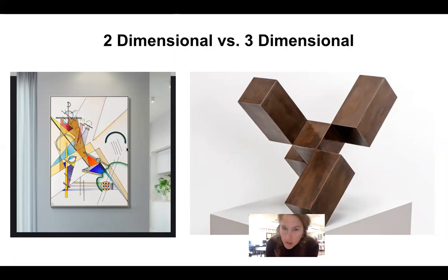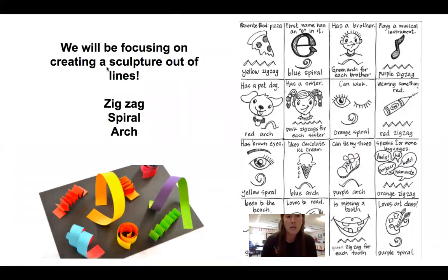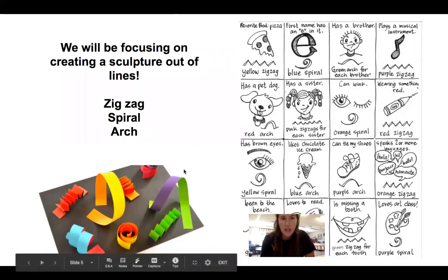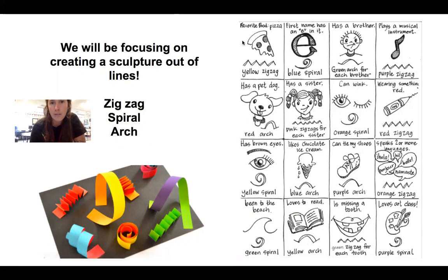Let's look at our art project this week. We'll be focusing on creating a sculpture out of lines. We're going to be focusing on zigzag, spiral, and arch. Now you're going to be using the sheet as a guide on how to make your sculpture. So for example, let's look at our first square right here.